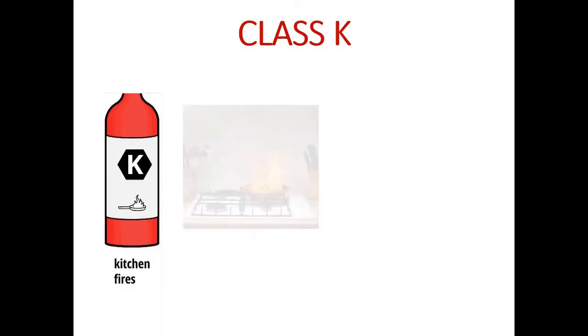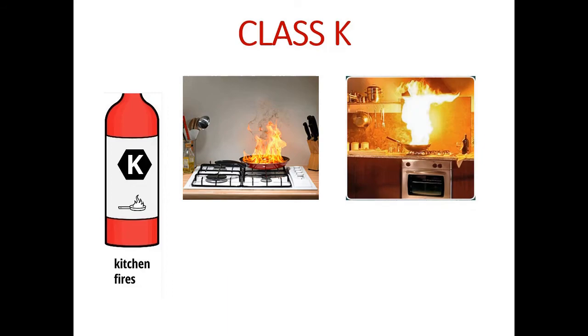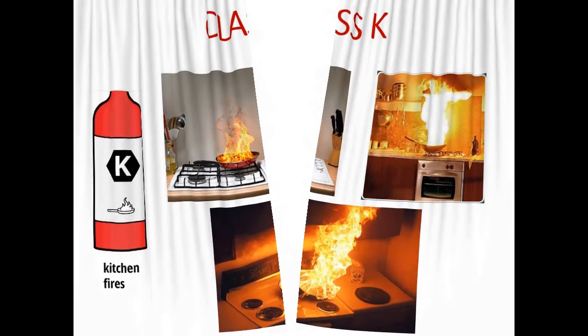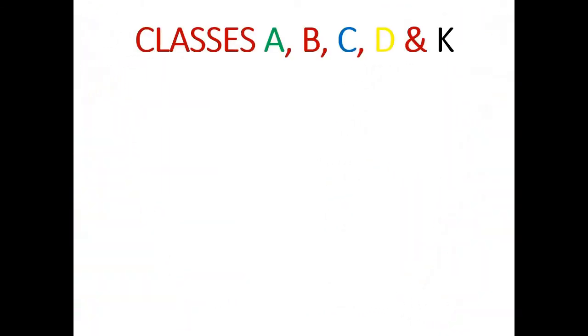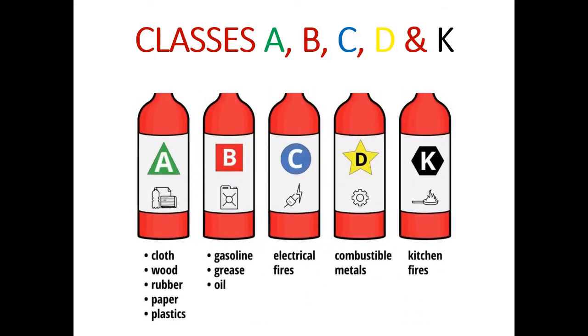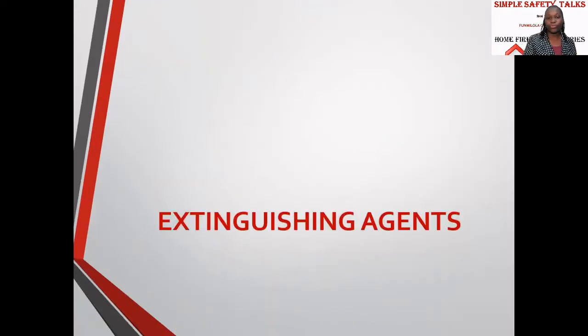Class K covers commercial cooking equipment — cooking oil, animal fat, and vegetable oil. So in summary, we have Class A, B, C, D, and K: ordinary combustibles (solids), flammable liquids, electrical equipment, combustible metals, and cooking oils. Those are the five basic classes of fire.